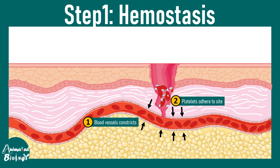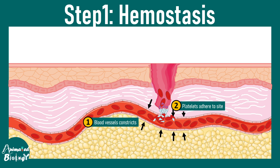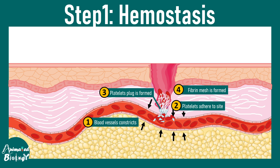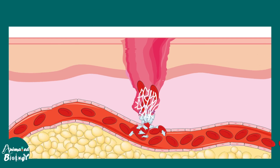Step one of the wound healing process is hemostasis. In this case, blood vessels which are ruptured constrict and there would be a platelet plug formation, because platelets adhere to the site of injury and ultimately form the platelet plug as seen in the picture. Eventually a fibrin mesh would be built around the platelet plug and the blood would be clotted, with no new blood flow.